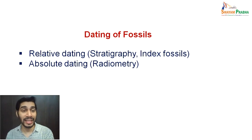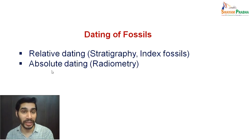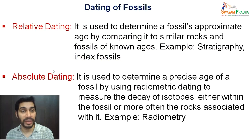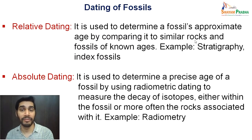The difference, as their names suggest, is that relative dating is more of a prediction — a relative age — whereas absolute dating gives an actual absolute age. We can define relative dating as the determination of a fossil's approximate age by comparing it with similar rocks and fossils of known age.